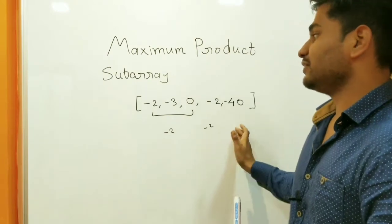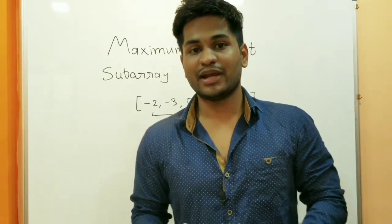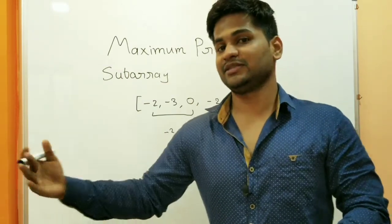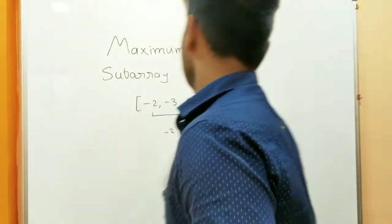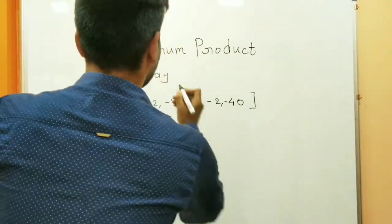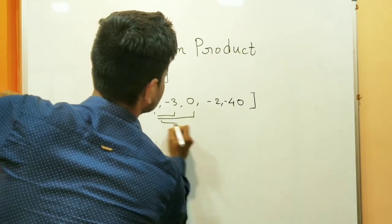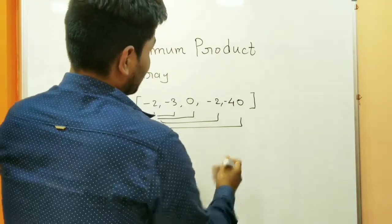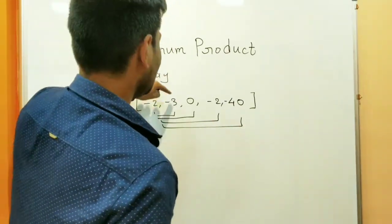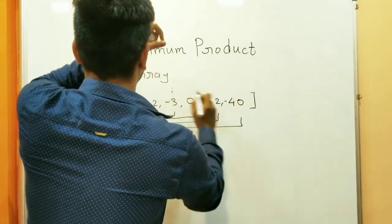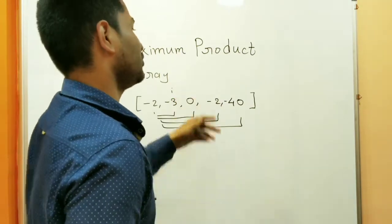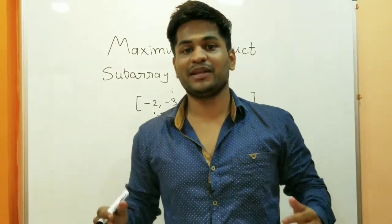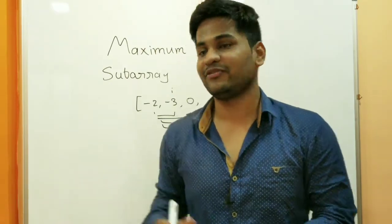The brute force solution is straightforward. You generate all possible subarrays and find the maximum product among them. You use two nested for loops — starting from each element, you calculate all subarrays from that point and store the maximum. This solution takes O(n²) time complexity because of the two for loops, which is not efficient.